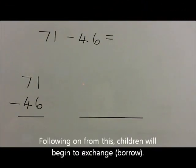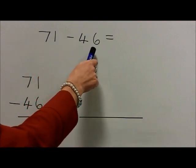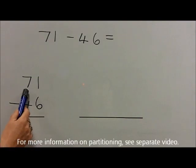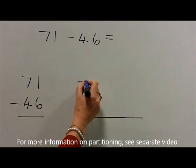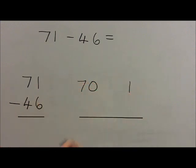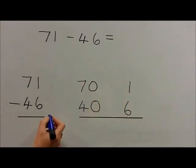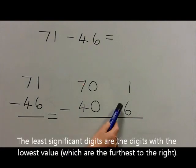Following on from this, children will begin to exchange. For example, with the question 71 take 46, they would first write this out. They then partition the 71 into the 7 tens which are 70 and the 1 unit which is 1. The 46 is also partitioned into the 4 tens which are 40 and the 6 units, written below the 1 unit. These 2 are both equal, so we add our equal sign and we are still doing a subtraction. We then start with the least significant digits, starting with 1 take away 6.